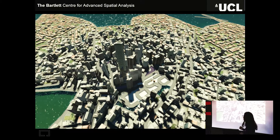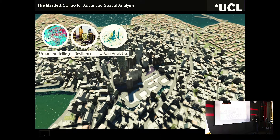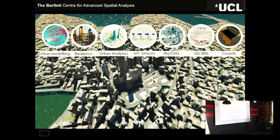A little bit about my department — this is CASA. This was done by the head of the department, Professor Andrew Hudson-Smith, who is also my supervisor. This was done about six years ago when they first introduced the first master's course, which I participated in. They used CityEngine — they introduced it as a tool to create rapid 3D cities for use in virtual environments and augmented reality environments. CASA specializes in the application and visualization of spatial analytic technologies and simulation models to cities and regions.